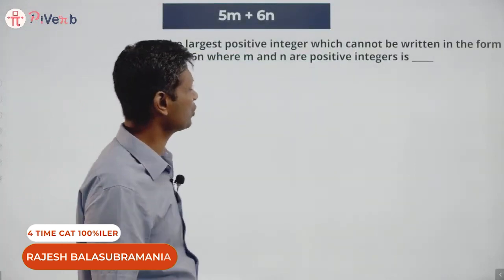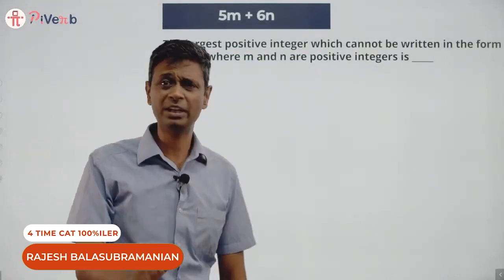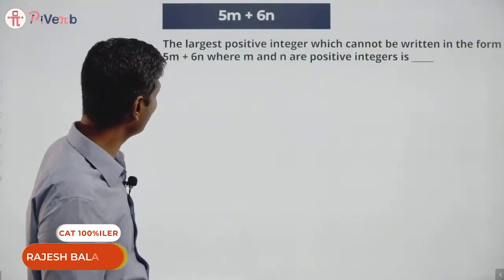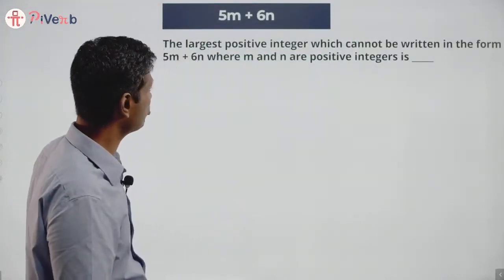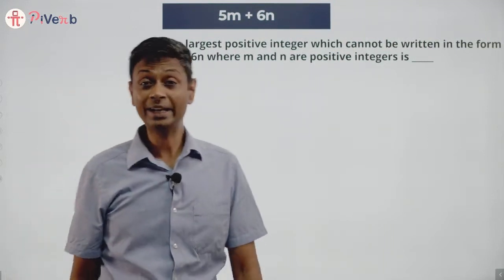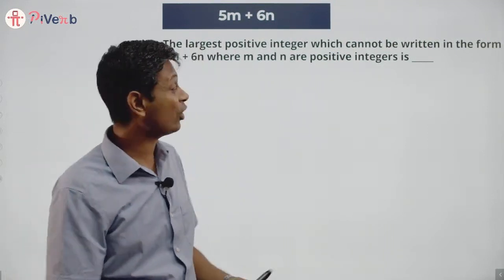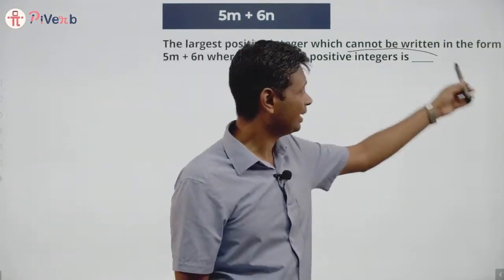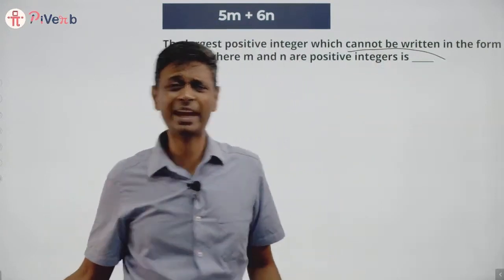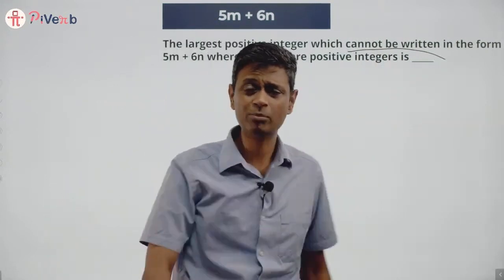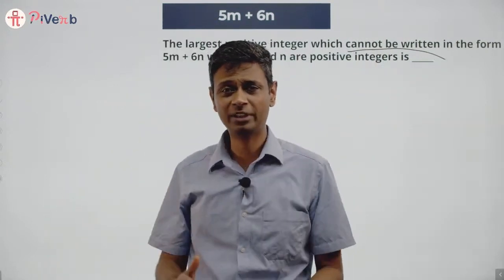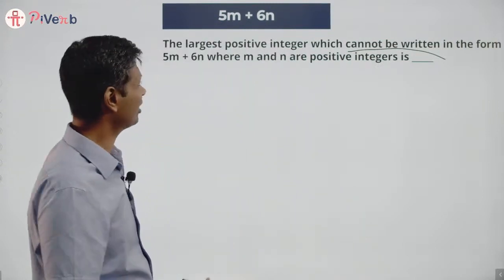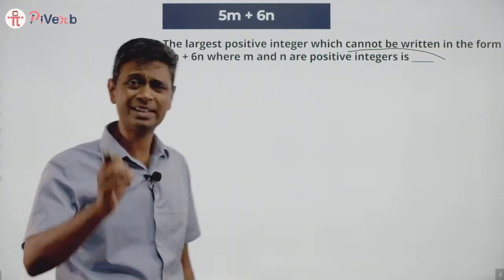Find the largest positive integer which cannot be written in the form 5m + 6n, where m and n are positive integers. Anytime I see 'cannot be written,' I want to think about what CAN be written. So let me think about what can be written in this form: 5m + 6n.